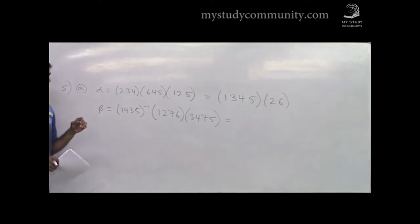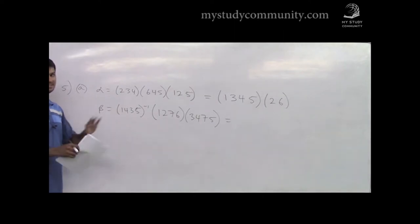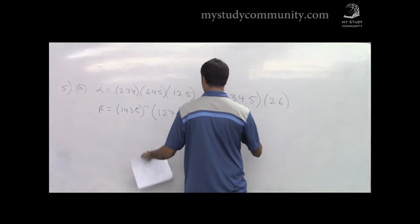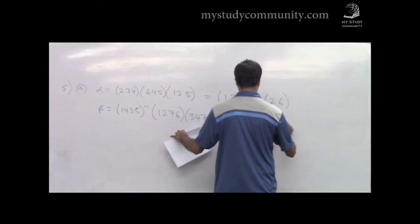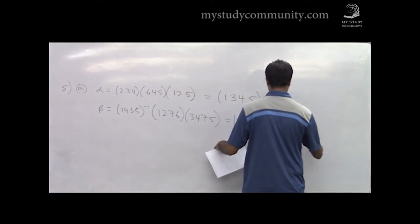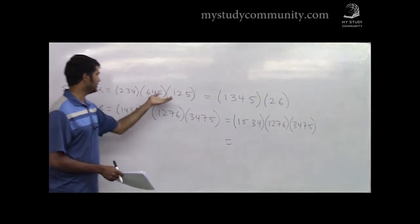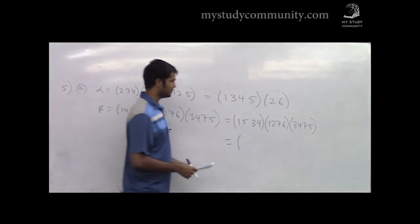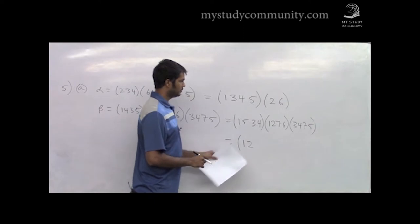There's another way to find the inverse: reverse all elements and rearrange so that 1 comes first — it works out the same both ways. So (1 4 3 5)⁻¹ = (1 5 3 4). Then to simplify beta, we do the same process: 1 maps to 1 and stays there. 2 maps to 7.